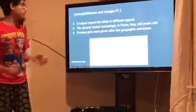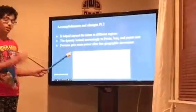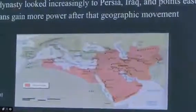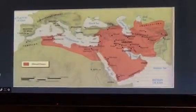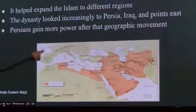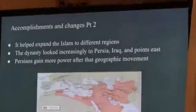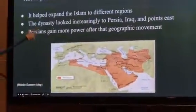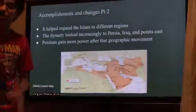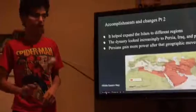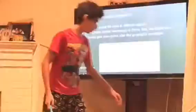Looking at the map once more: they moved their capital to Baghdad, located approximately here. That was the main center of the Abbasid Empire, and it helped the empire spread even though it didn't conquer much land. They looked more east, losing their land in Spain and Morocco, which was one change they accomplished. This included the Persians in Iraq and extended further east. Because they pointed east, they focused more on the Persians, whose voices were heard much more in the Islamic Empire, giving them greater political power.